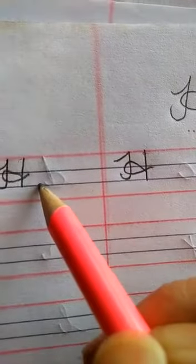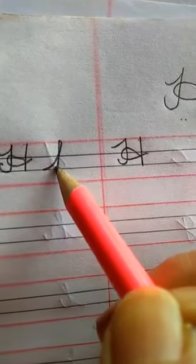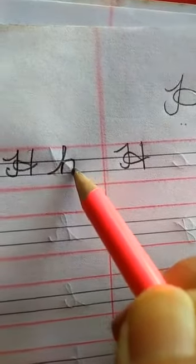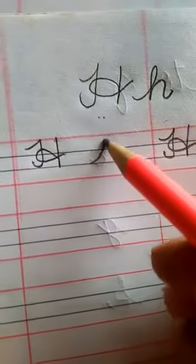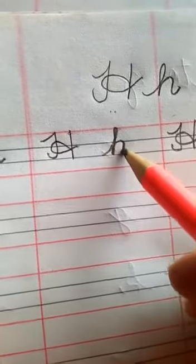Now small h starts from third line, go to first line, then come back to third line and make this third to first, then third and second and then third.